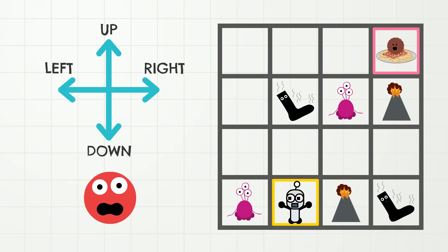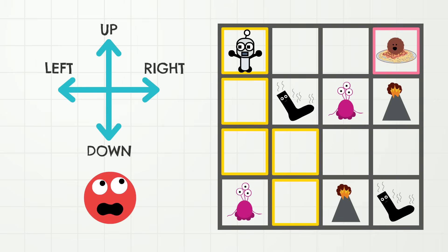First, Tiny Robot should go which direction? Up! And how many squares? One square! Now, Tiny Robot should go which direction? Up! And how many squares? One square! And now, Tiny Robot should go which direction? Up! And how many squares? Three squares! And now, Tiny Robot should go which direction? Right! How many squares? One, two, three squares!